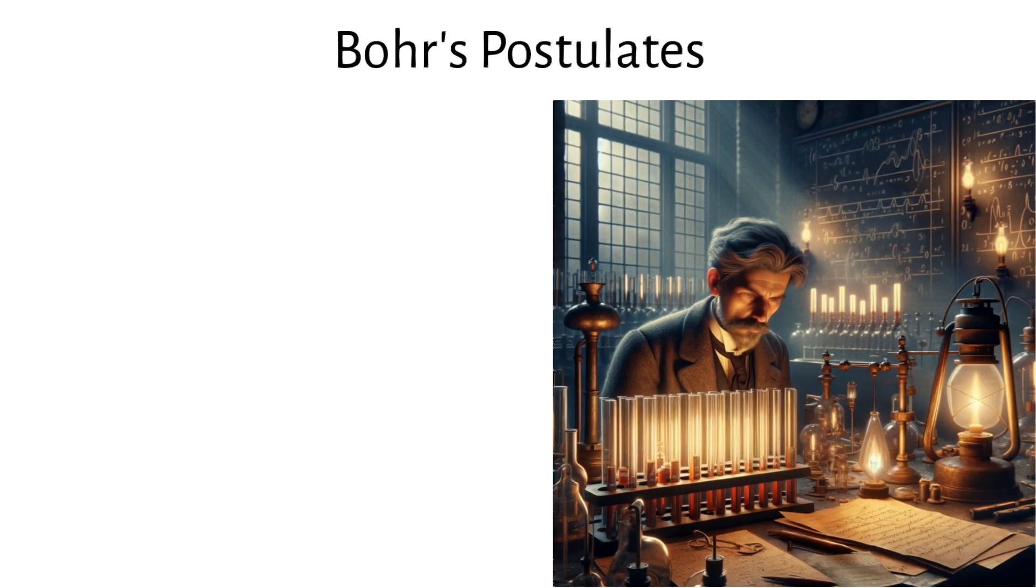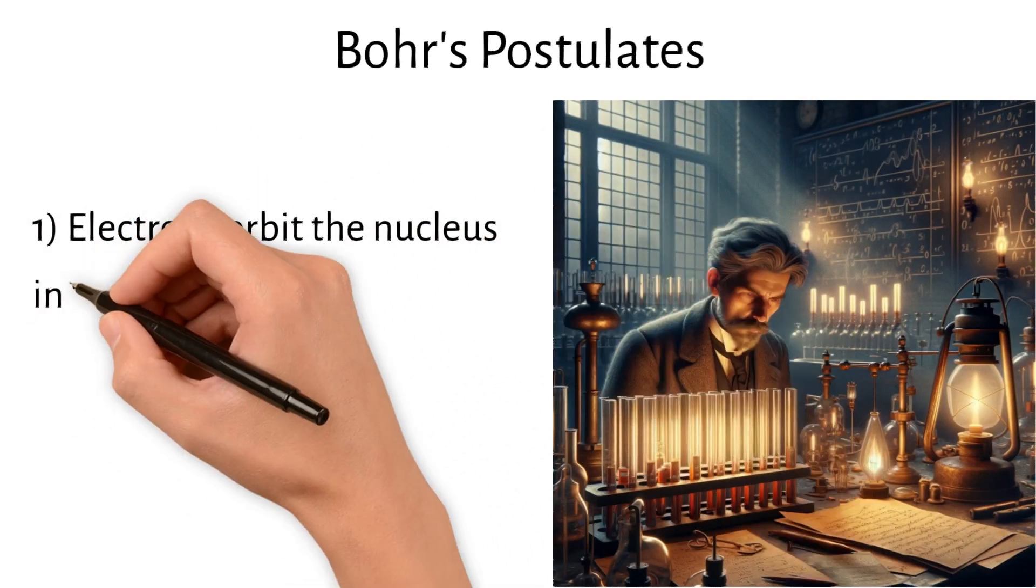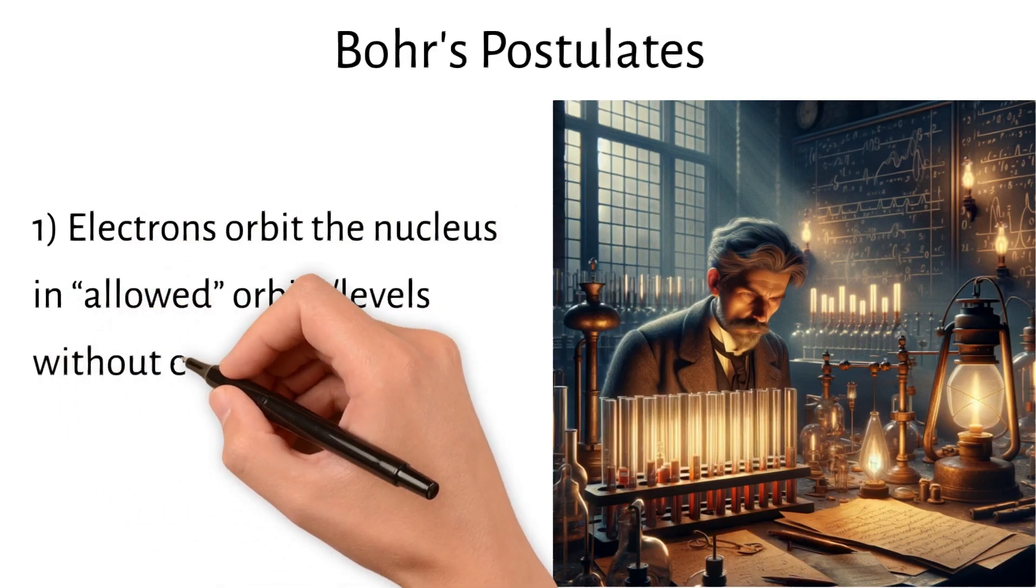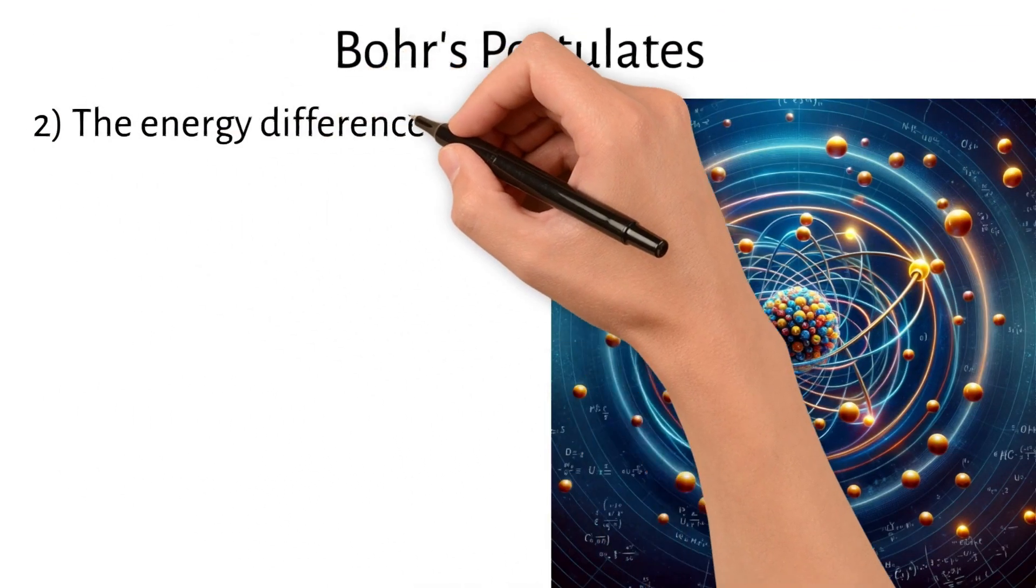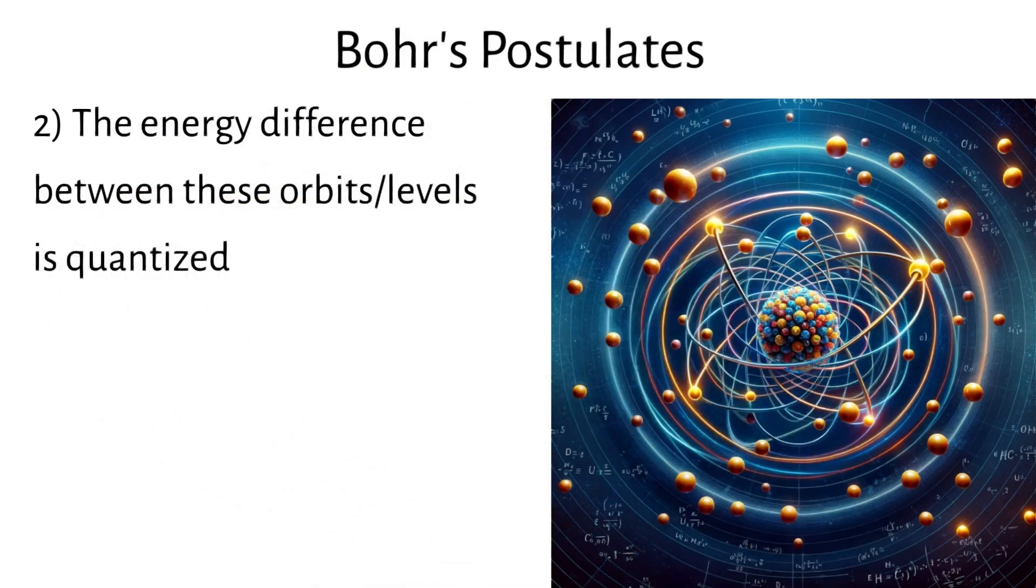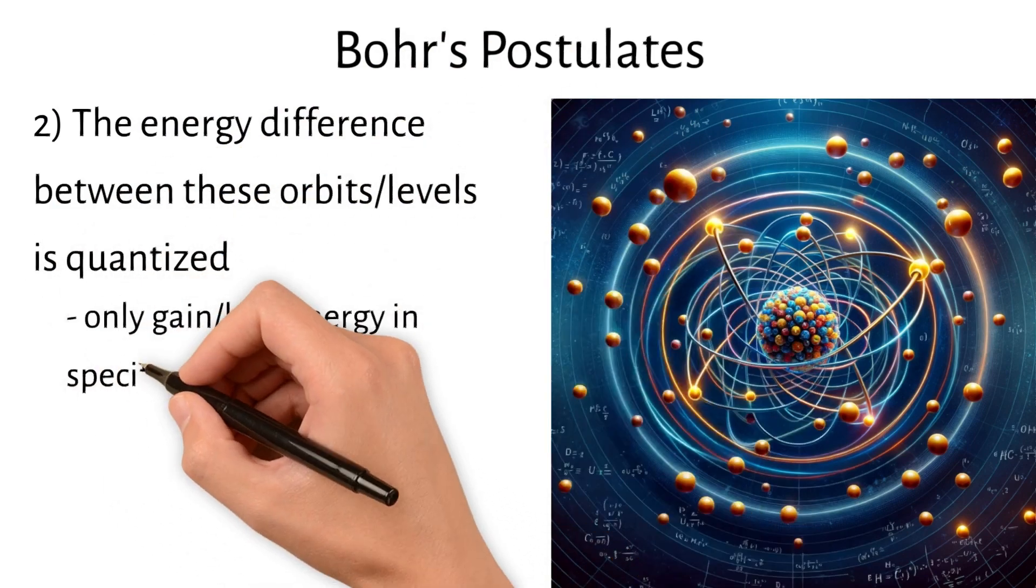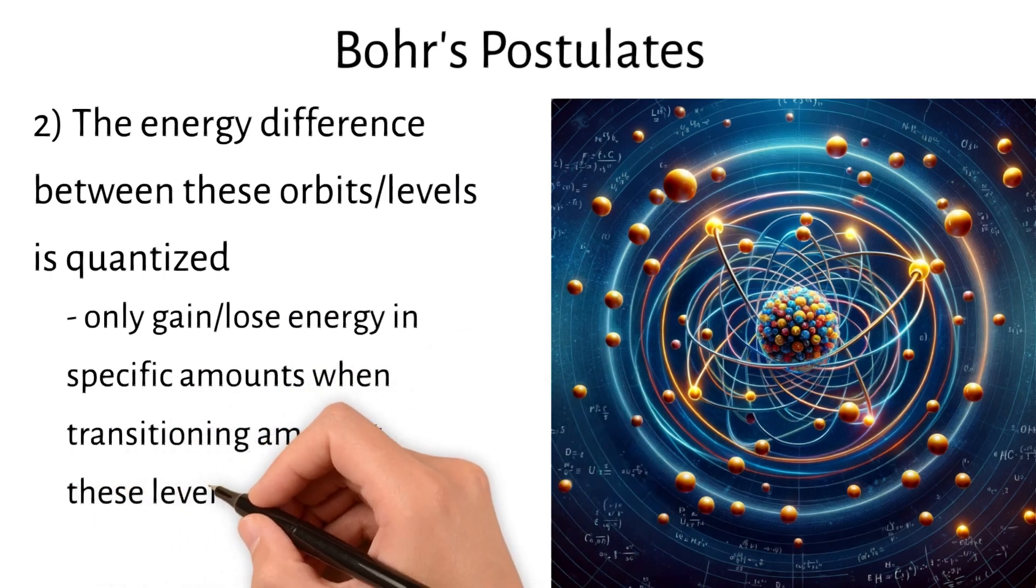He introduced several postulates. First, electrons orbit the nucleus in certain allowed orbits or levels without emitting radiation. Second, the energy difference between these orbits or levels is quantized, meaning electrons can only gain or lose energy in specific amounts when transitioning amongst these levels.